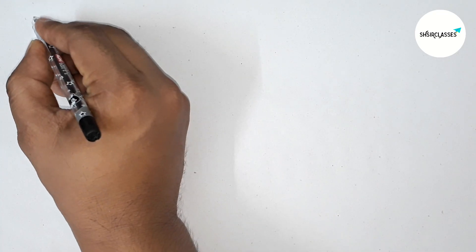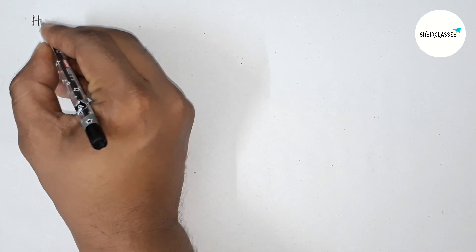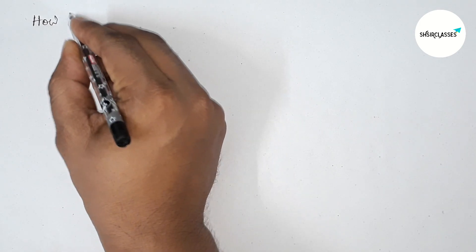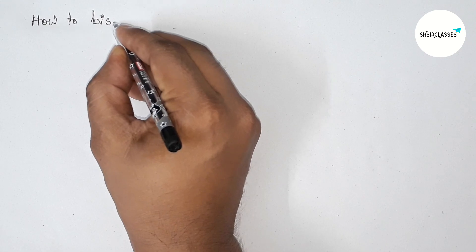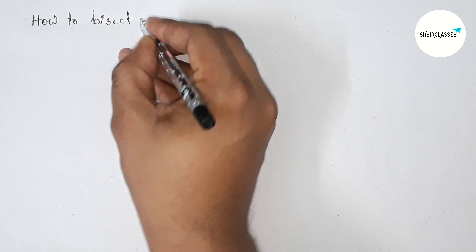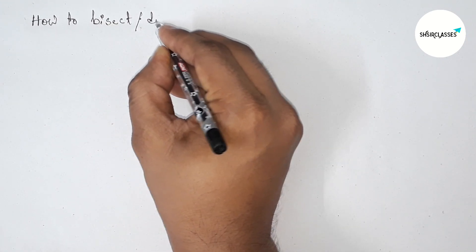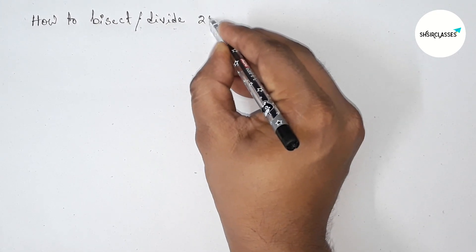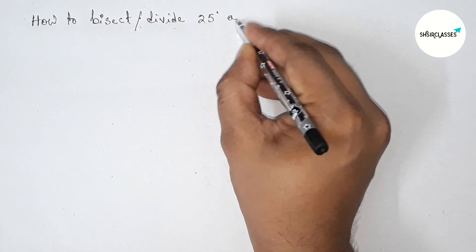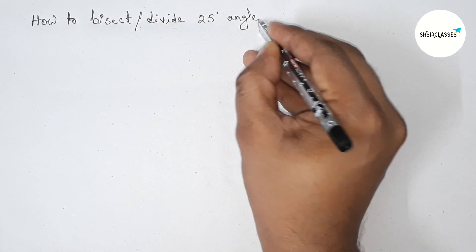Hi everyone, welcome to SI Share Classes. Today in this video we have to bisect or divide a 25 degree angle in an easy way, so please watch the video till the end. So let's start the video.